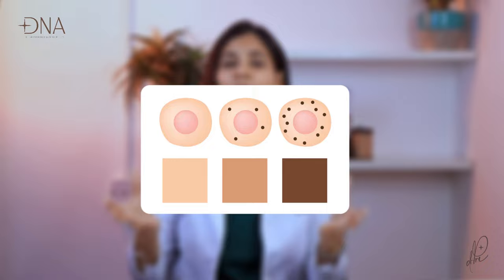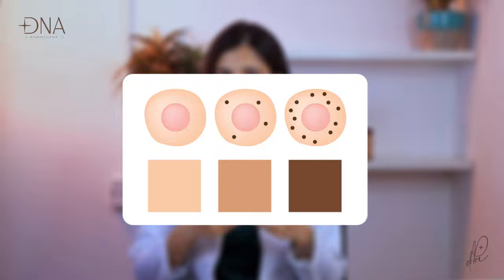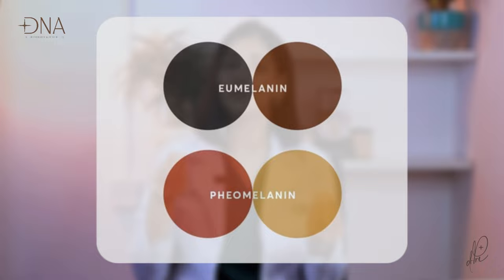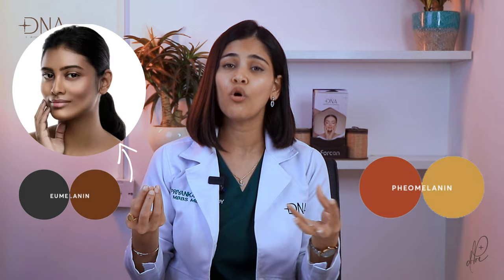Glutathione is a tyrosinase enzyme inhibitor. The tyrosinase enzyme is involved in melanin production. Melanin is our skin pigment. There are two types: eumelanin, which gives a darker skin tone, and pheomelanin, which gives a lighter skin tone. Glutathione inhibits the tyrosinase enzyme and increases pheomelanin, resulting in a lighter skin tone.